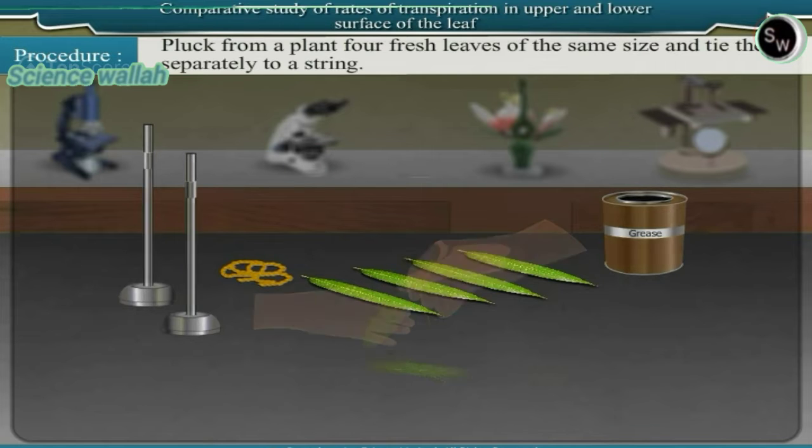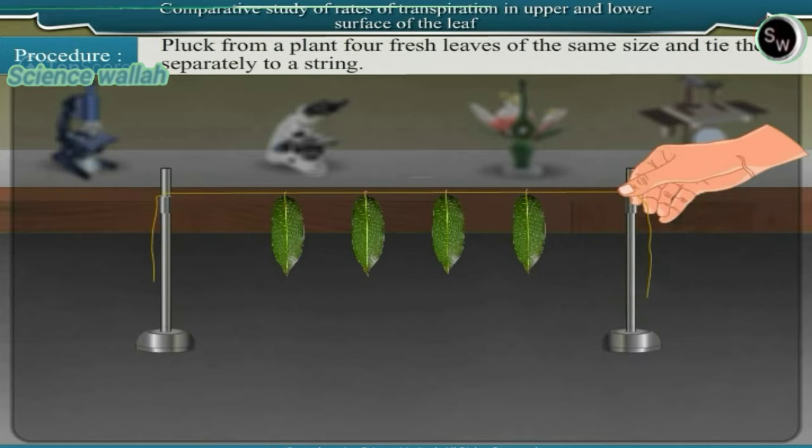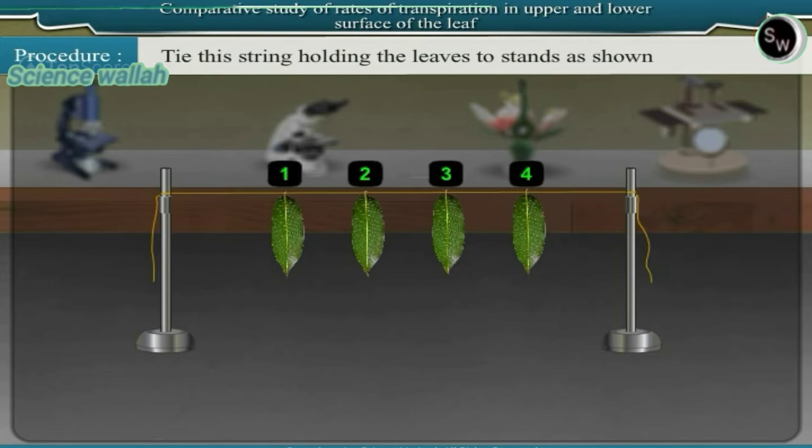Procedure: Pluck from a plant 4 fresh leaves of the same size and tie them separately to a string. Tie this string holding the leaves to stands as shown.